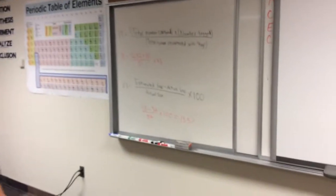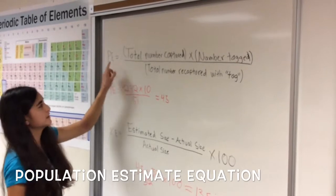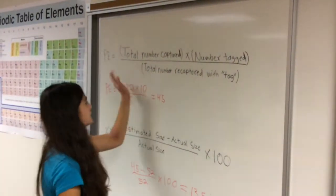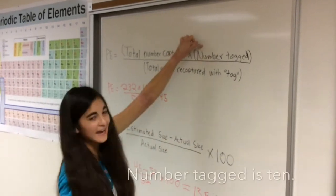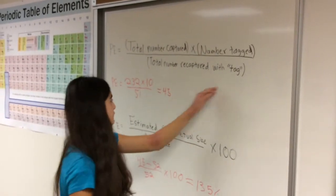After that, we will use that data to do math. The one math equation we'll use is the population estimate. That's the total number of beans you captured times the number tagged divided by the total number recaptured. And the number tagged is 10 because there's 10 brown beans in there.